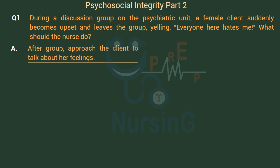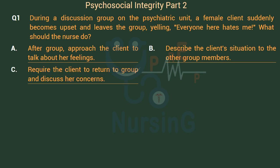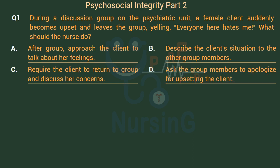Option A: After group, approach the client to talk about her feelings. Option B: Describe the client's situation to the other group members. Option C: Require the client to return to group and discuss her concerns. Option D: Ask the group members to apologize for upsetting the client.